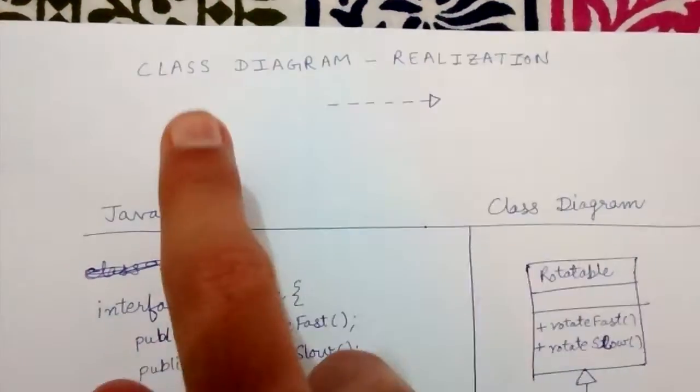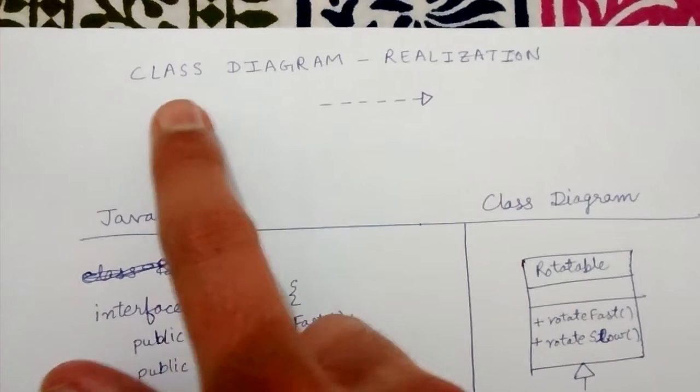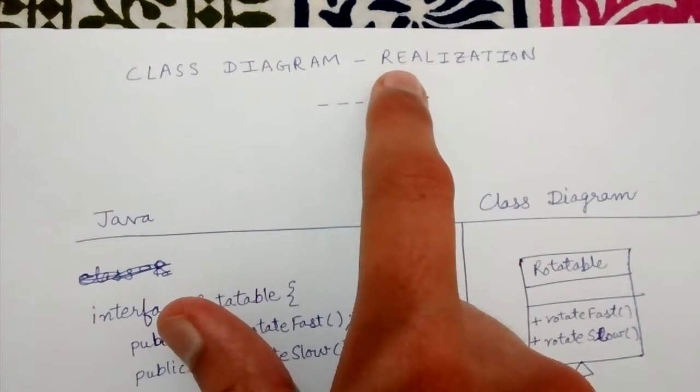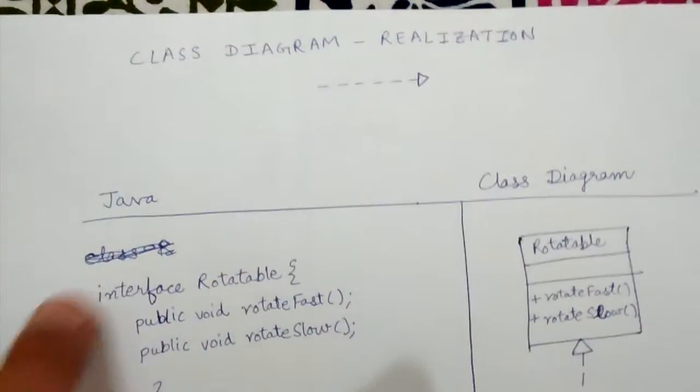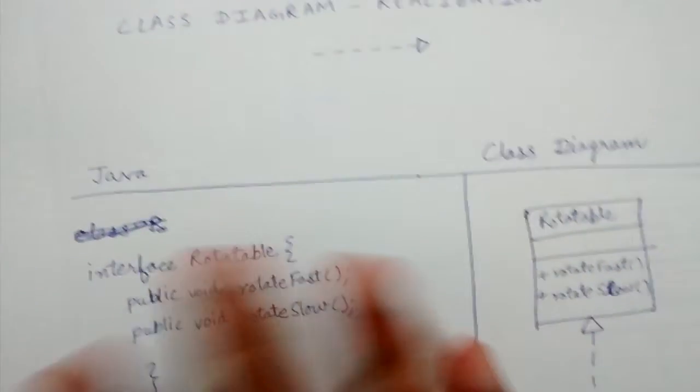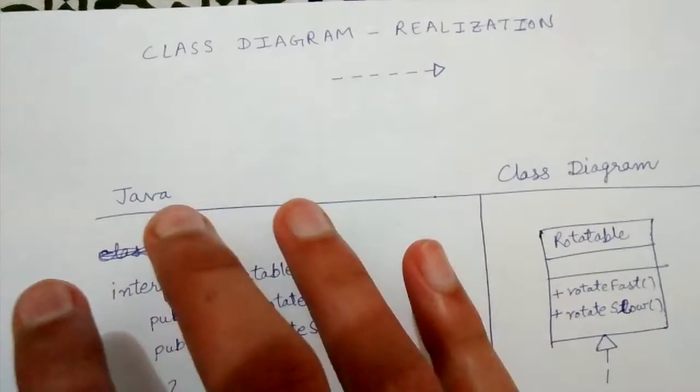Today we will look at another kind of relationship between classes in a class diagram which is called realization. This is related to the implementation of an interface in Java.